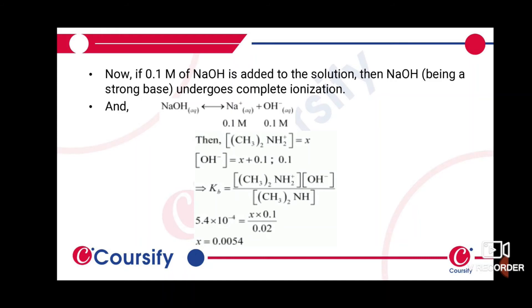The value of x will be very small because dimethylamine is not a strong base and is not highly dissociated. Adding sodium hydroxide increases the OH⁻ concentration, which makes the backward reaction favorable. Therefore, dimethylamine will not dissociate much, and x will be negligibly small.